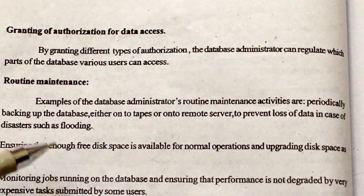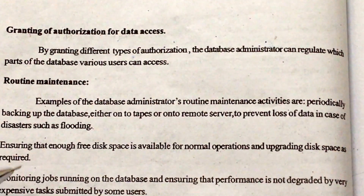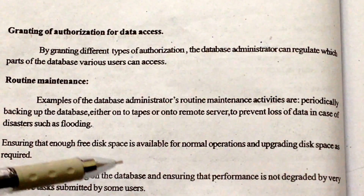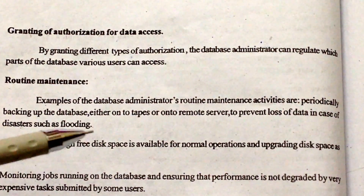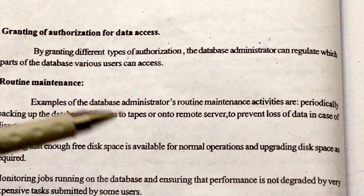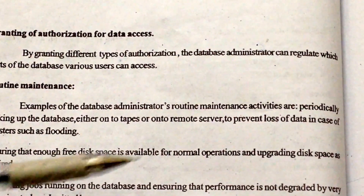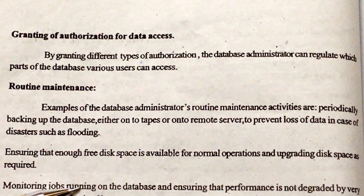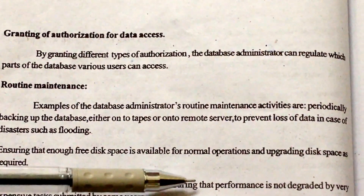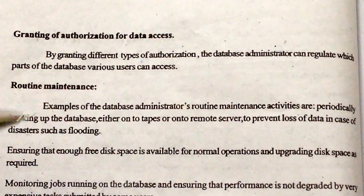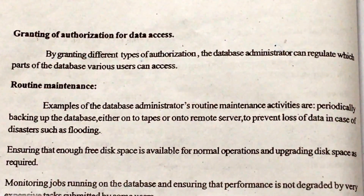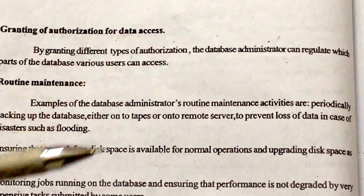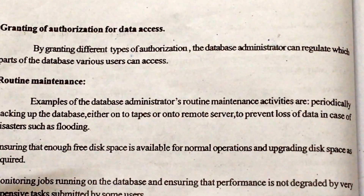The DBA must prevent loss of data in case of disasters such as flooding or other natural disasters. He also ensures that enough free disk space is available for normal operations — otherwise there is a chance of corruption. He upgrades disk space as required and monitors jobs running on the database, ensuring that performance is not degraded by expensive tasks submitted by some users.